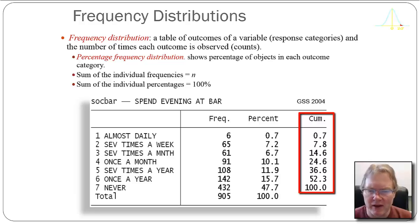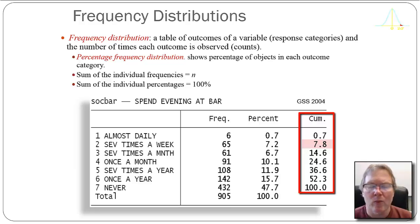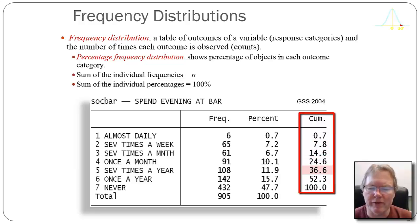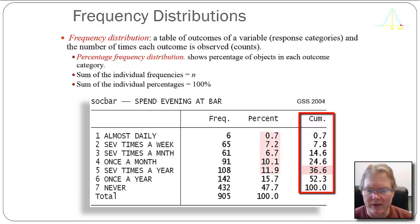So the first cumulative value is 0.7. The second is 7.8, which is 7.2 plus 0.7 — there's a little rounding error here. It tells us that 7.8% of the sample claimed to go to a bar or tavern several times a week or less. Looking at category 5, 'several times a year,' the cumulative frequency distribution is 36.6, which tells us that approximately 37% of our sample claimed to go to a bar several times a year or less. That's the 11.9% in category 5, plus 10.1 in category 4, plus 6.7 in 3, plus 7.2 in 2, and 0.7 in category 1.